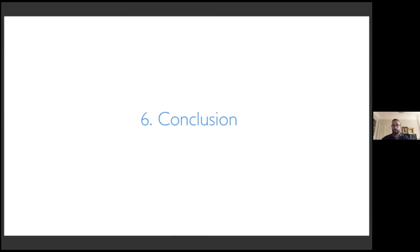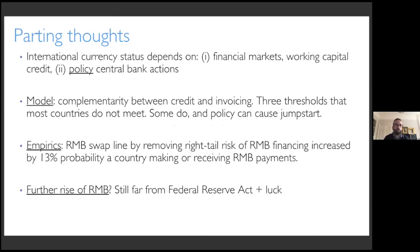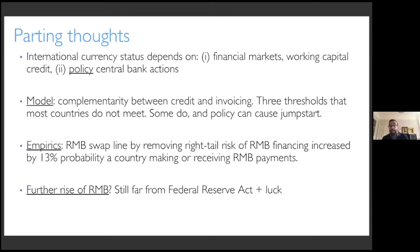To conclude: we studied the extent to which a currency — not becomes dominant — but goes from being like the South African Rand, where Nigeria and Mozambique don't use it when negotiating with each other, to becoming an international currency. We observed one such case in the last 10 years: the RMB. Moreover, because we have granular data and because of the swap line exogeneity, we can test whether the policies that jump-started the RMB were indeed causal.